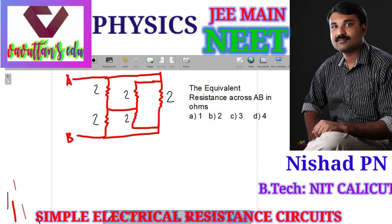What is the electric circuit? Find the equivalent resistance across AB. Options are given: 1 ohm, 2 ohm, 3 ohm, and 4 ohm. All resistances are 2 ohm. We have 5 resistances, each of 2 ohm.